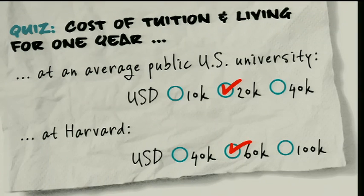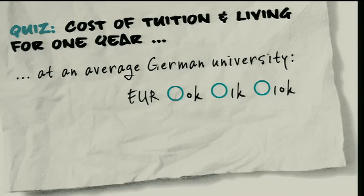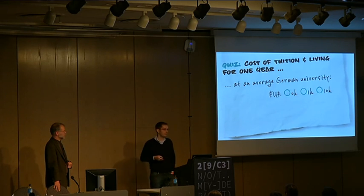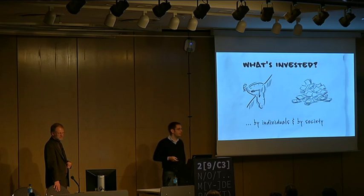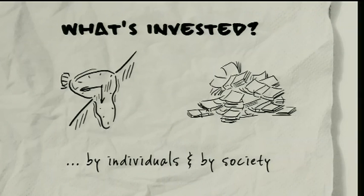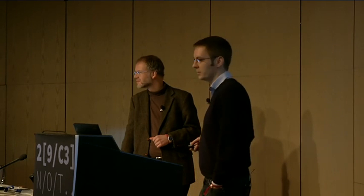What about Germany? We have a cheap education system. What does it cost to study in Germany for one year at a German university, tuition and living? Around 10,000 euros. So everybody is investing a lot of time and money into going to university — between 10,000 euros and $60,000 depending on where you want to be educated.